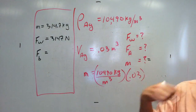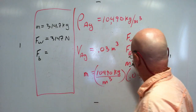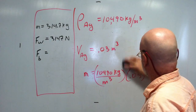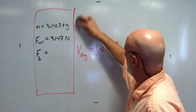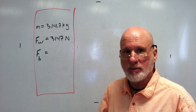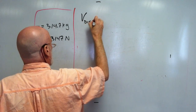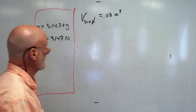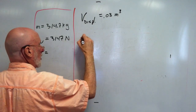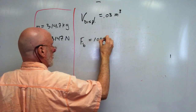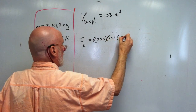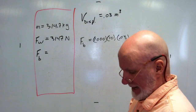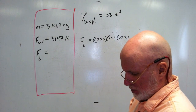Now I want to know the buoyant force. The volume that's displaced is going to be point zero three cubic meters. Therefore, the buoyant force is going to be a thousand times ten times point zero three.